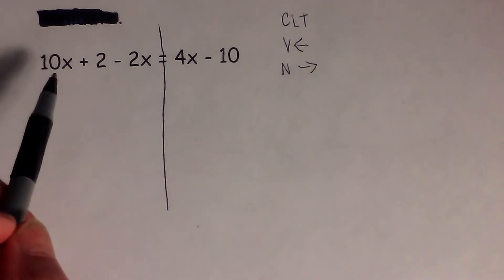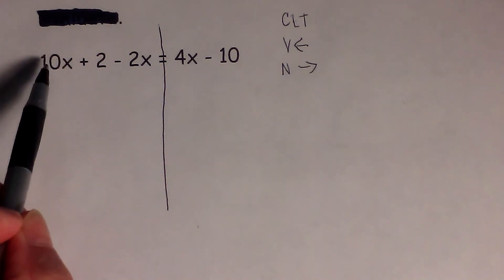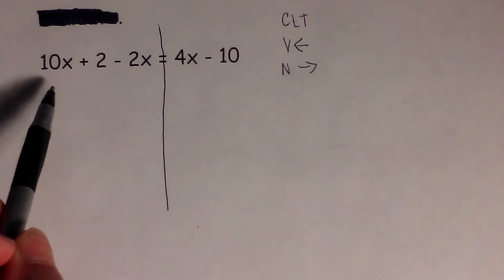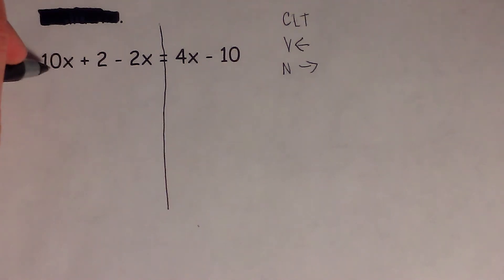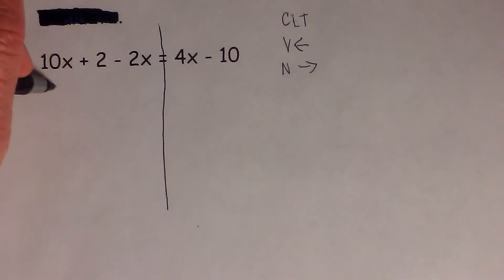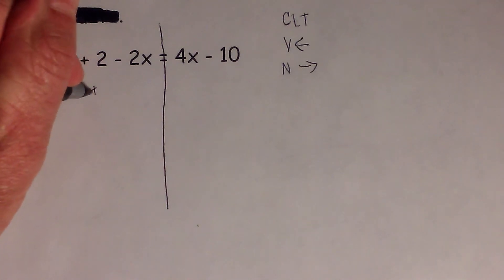First, let's start on the left and see if we can combine any like terms, which we can. We have 10x and 2x, so 10 minus 2 is 8. This becomes 8x plus 2.